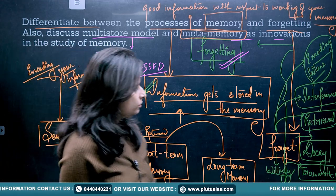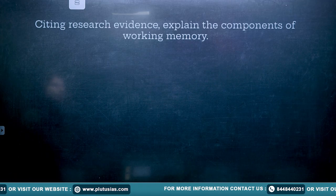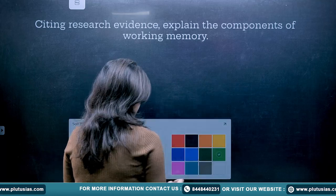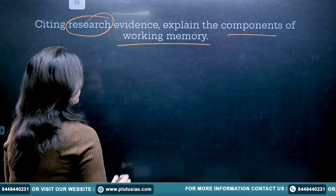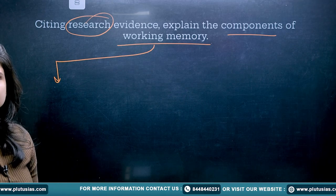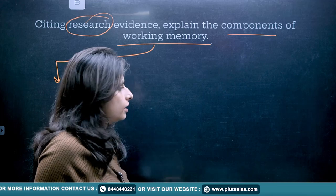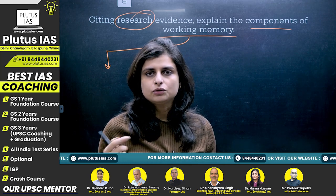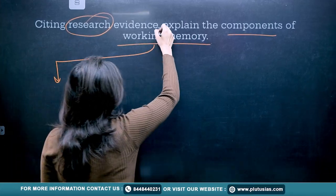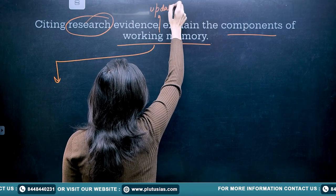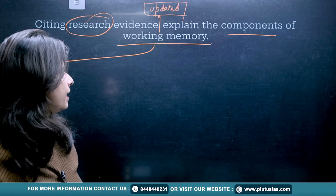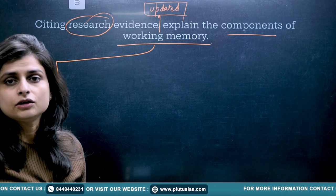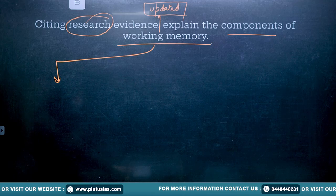Now let's move on to the next question. The next question says: citing research evidence, explain the components of working memory. Here you have to talk about researchers and explain the components of working memory. In working memory, various parts are involved — information which is getting continuously processed and also getting continuously updated. The most important aspect of working memory is that the information is getting continuously updated.